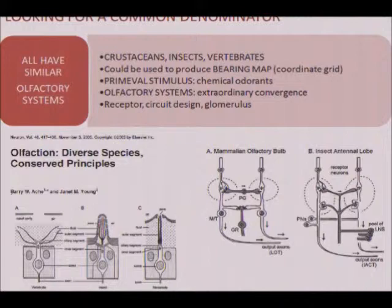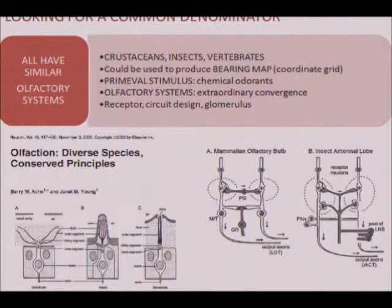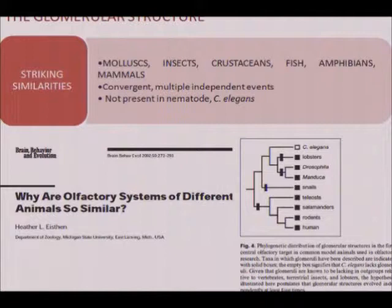One common denominator is that the olfactory system is remarkably similar across taxa — this has been noted and studied at all levels: the sensory neuron and the wiring diagrams. Chemical odorants are a primeval stimulus, and there is this enormous olfactory convergence across taxa. The glomerular structure in particular — Heather Eisthen demonstrates that this is probably convergence across this wide range of taxa, simply absent in the nematode.